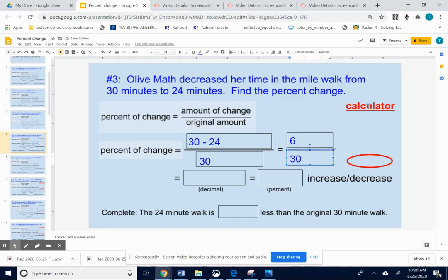Okay, use the calculator link if you need, but if you take 6 divided by 30, you will get 0.2.